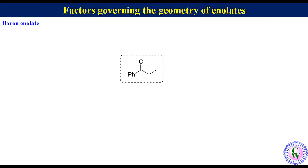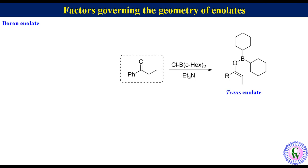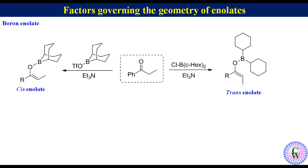In the case of boron enolates, the geometry of the enolate mainly depends on the size of substituents on the boron atom. Bigger substituents favor trans enolate while smaller substituents favor cis enolate. For example, ethyl phenyl ketone when treated with chlorodicyclohexyl borane in the presence of triethylamine produces trans enolate, while treatment with a bicyclic boron reagent produces cis enolate. The bicyclic part may look large, but as far as the rest of the molecule is concerned, it is tied back behind the boron and the methyl group can easily lie cis to oxygen.